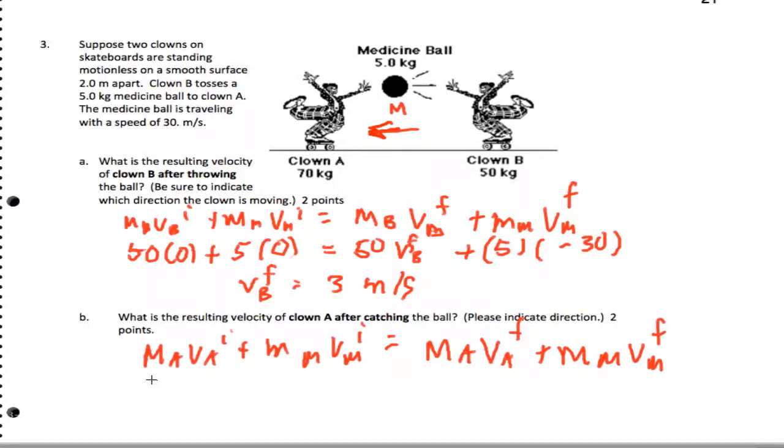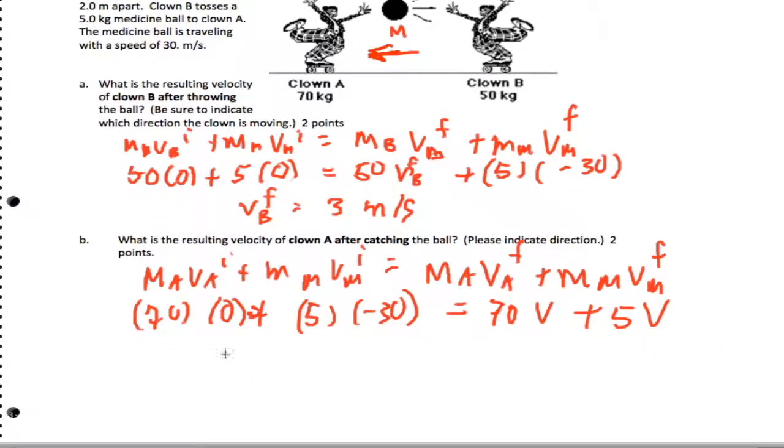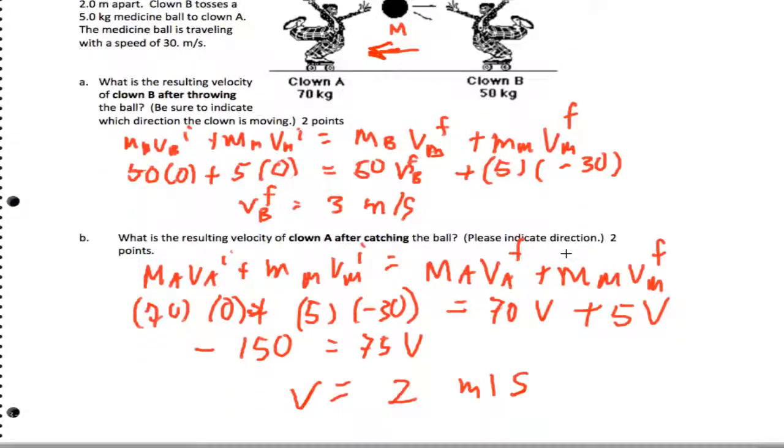So starting off, the clown is at rest. Next, the medicine ball is going at negative 30. And then what ends up happening is that they hit and stick traveling at the same speed. So I'm going to end up actually getting negative 150 equals 75 V. So my V is going to be left, is going to be calculated to be 2 meters per second. So that's it for that particular problem number 3.